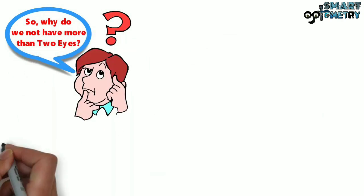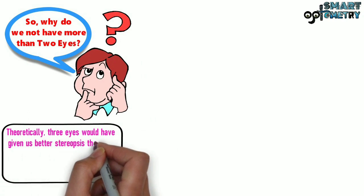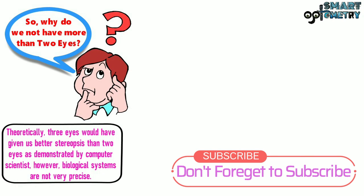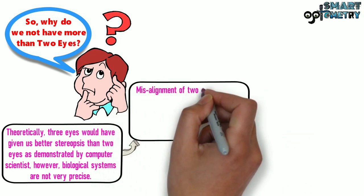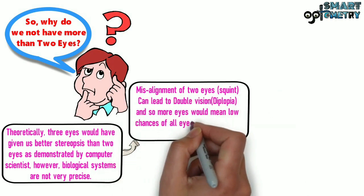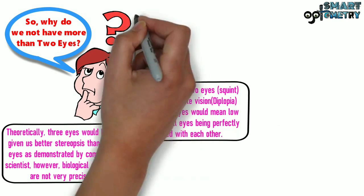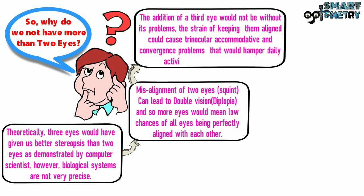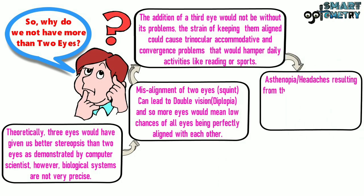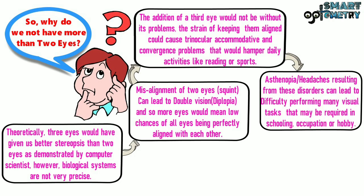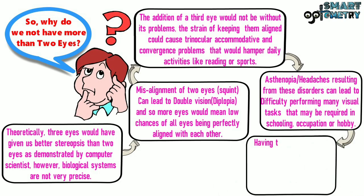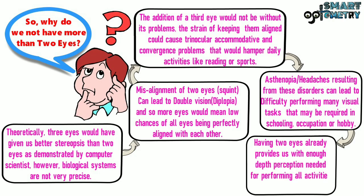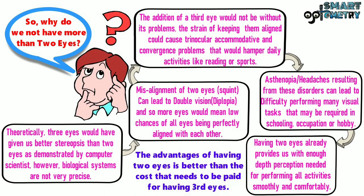Why do we not have more than two eyes? Theoretically, three eyes would give better stereopsis than two, as demonstrated by computer scientists. However, biological systems are not very precise. Misalignment of two eyes — squint — can lead to double vision (diplopia), and so more eyes would mean lower chances of all eyes being perfectly aligned. A third eye would cause trinocular accommodative and convergence problems, hampering daily activities like reading or sports. Asthenopia and headaches from these disorders can lead to difficulty in many visual tasks required for schooling, occupation, or hobby. Having two eyes already provides enough depth perception for all activities, and the advantages outweigh the cost of a third eye.